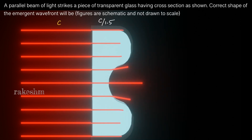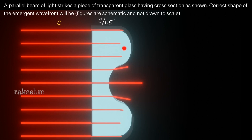The rays which are outside travel further than those still inside the glass because they have come out. All these points here are in the same phase, so we will have a plane wavefront, followed by a bulge, and again a plane wavefront.